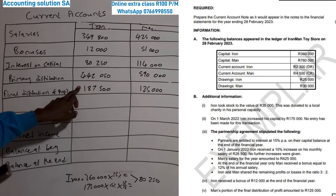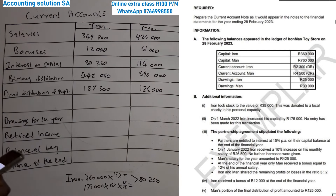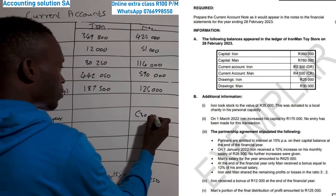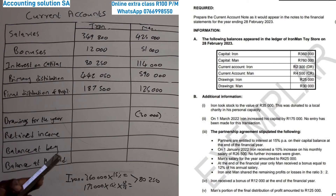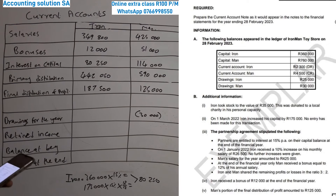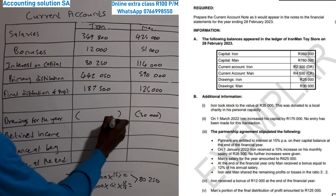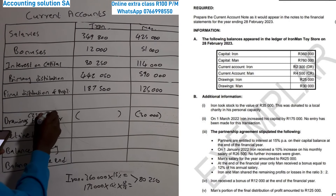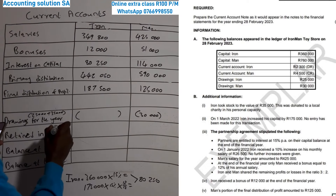The next part is drawings. Under information B, Men's drawings are only 30 000 — no other impact. Drawings must be in brackets to indicate the partner took something. For Iron, at the beginning of the year drawings were 25 000, and from additional information, Iron also took stock to the value of 35 000, donated to a local charity in his personal capacity — it's still a drawing, not a donation, because it was in his personal capacity. So Iron's total drawings = 25 000 + 35 000 = 60 000.